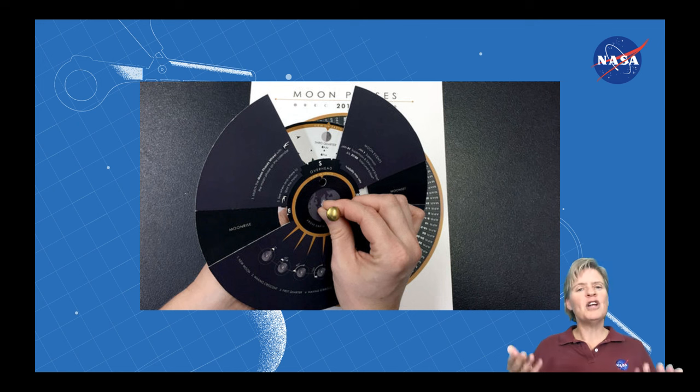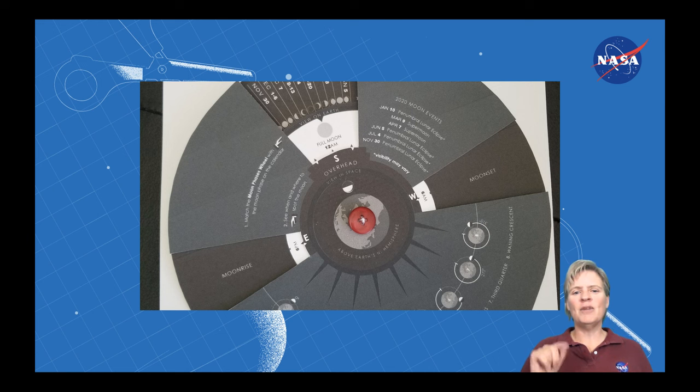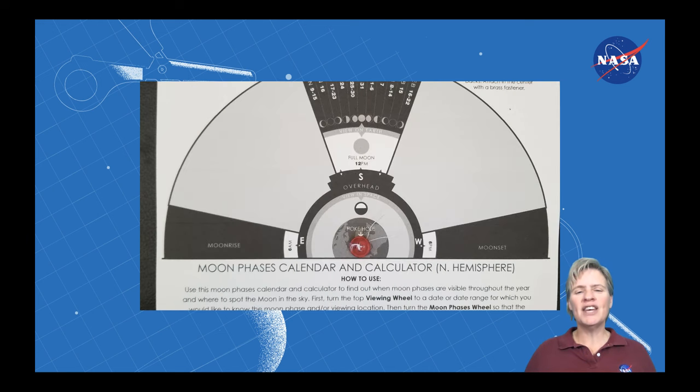Again, if you don't have a brass fastener, this is where the button comes in handy. You see what I did there? You got a little button on one side and a button on the other side. Sew them together. Works perfectly.